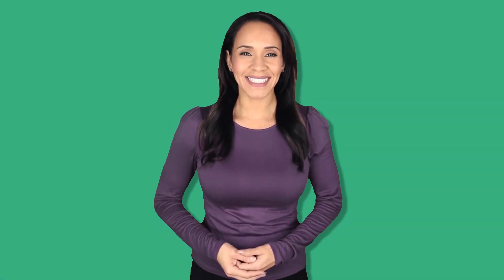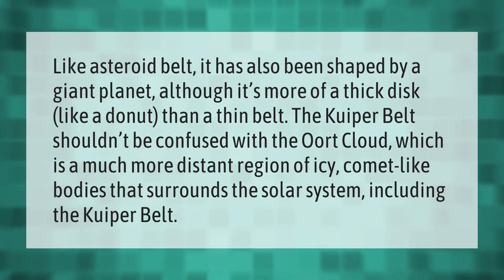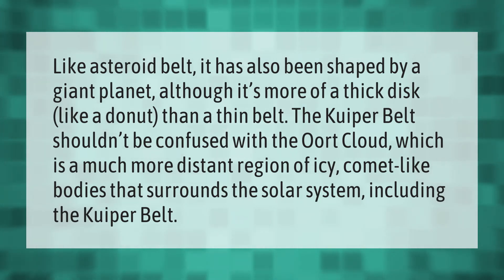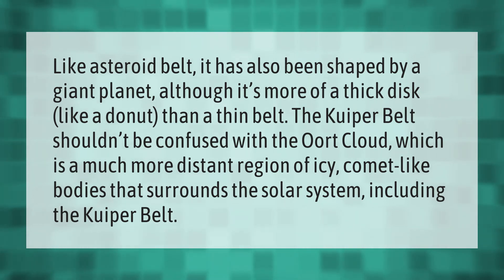Like the asteroid belt, the Kuiper Belt has also been shaped by a giant planet, although it's more of a thick disc like a donut than a thin belt. The Kuiper Belt shouldn't be confused with the Oort Cloud, which is a much more distant region of icy comet-like bodies that surrounds the entire solar system, including the Kuiper Belt.